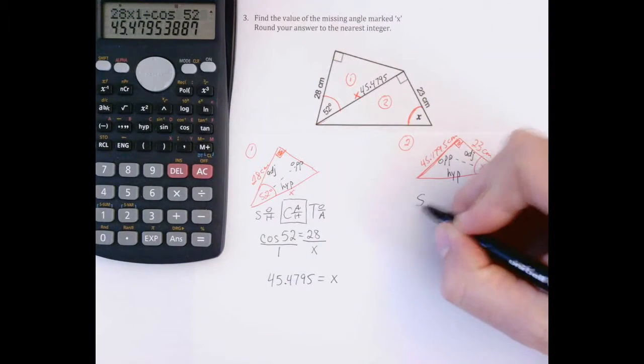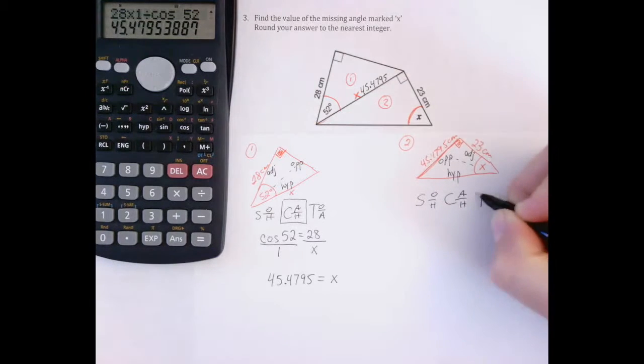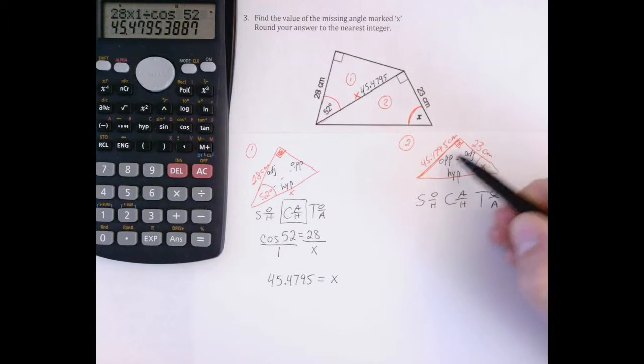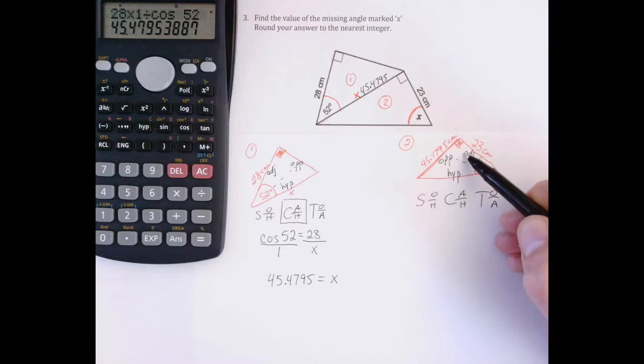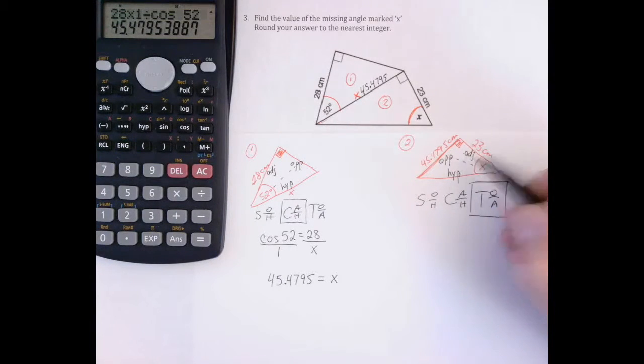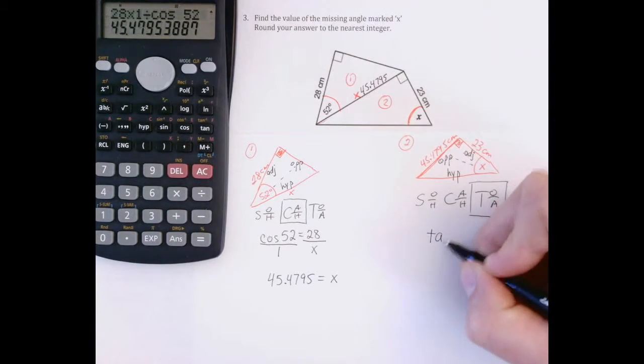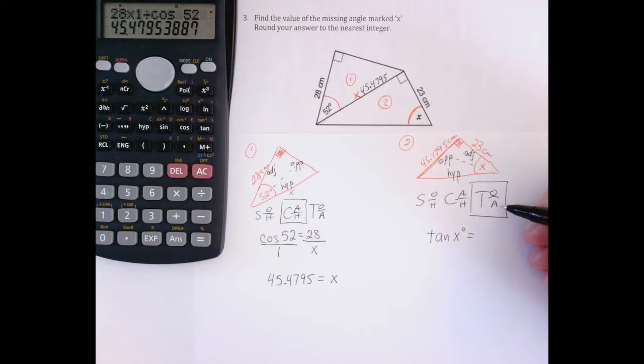So when I write out SOHCAHTOA, I got to figure out, I'm looking for the angle. I have my opposite and adjacent sides. Hypotenuse is no use to me. So I need the formula with the O and the A. O for opposite and A for adjacent. That's TOA. So I know that the tan of x degrees is equal to opposite divided by adjacent.